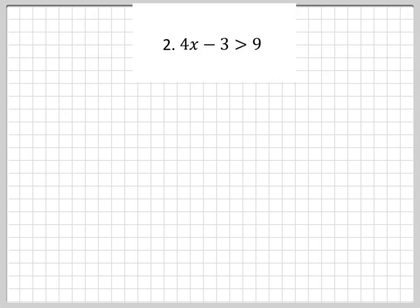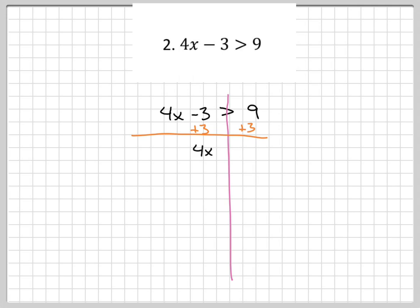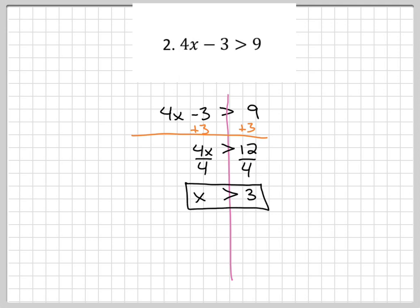Let's do another example. Here I have 4x minus 3 is greater than 9. For the most part I can treat this just like an equation. I'm going to draw a line through my inequality sign so I don't get confused or switch up the two sides. First, I'll add 3 to both sides — this doesn't activate either of those rules — giving 4x is greater than 12. Then I divide by 4, which is a positive number, so again no rules are activated. My final answer is x is greater than 3, with x already on the left-hand side.